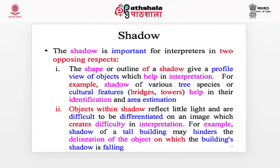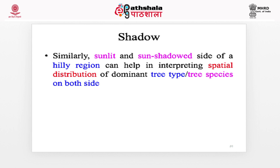Shadow is an important element in two opposing respects. First, the shape or outline of a shadow gives a profile view of objects, which helps in interpretation. For example, shadows of various tree species or cultural features like bridges and towers help in their identification and area estimation. On the contrary, objects within shadow reflect little light and are difficult to differentiate on an image, creating difficulty in interpretation. For example, the shadow of a tall building may hinder the delineation of objects upon which the shadow falls. Similarly, sunlit and sun-shadowed sides of a hilly or mountainous region can help in interpreting the spatial distribution of dominant tree types or species on both sides.